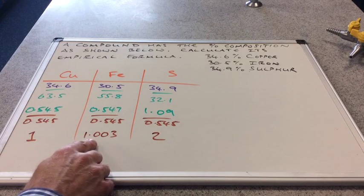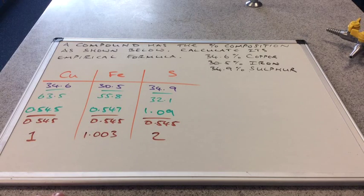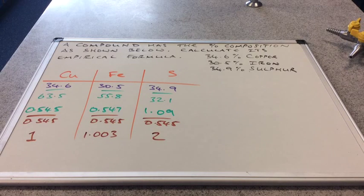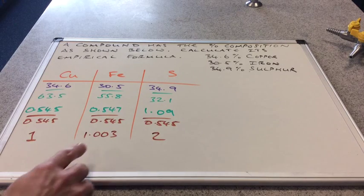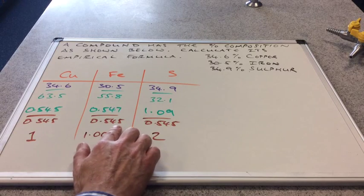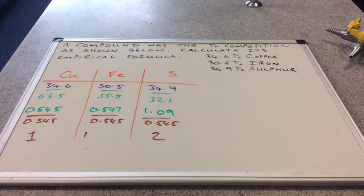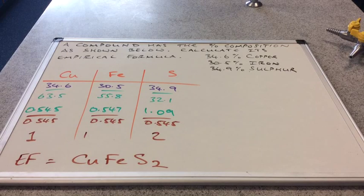It's very important that you don't round too much. So, for example, if that was 1.5 or 1.4 or 1.3, you certainly couldn't round that back to the one or up to the two if it was 1.5. But 1.003, well, that's safe to say that it's one. So we're just going to say that that is indeed one. So, of course, that means that the empirical formula for this compound is CuFeS2.